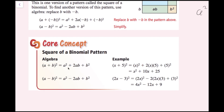The algebra version: the quantity a plus b squared equals a squared plus 2ab plus b squared, and a minus b quantity squared equals a squared minus 2ab plus b squared. For example, x plus 5 squared gives x squared plus 2 times x times 5 plus 5 squared, which simplifies to x squared plus 10x plus 25.